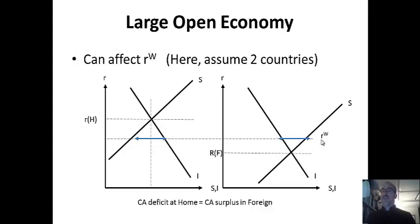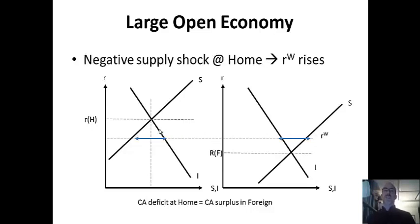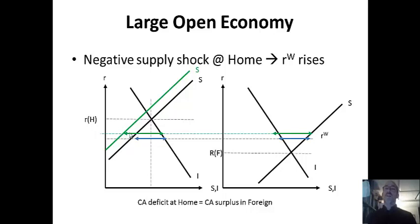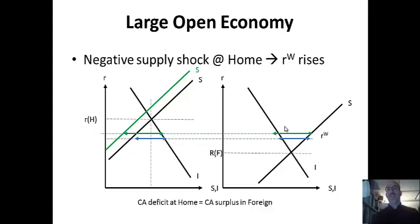If something changes in one country, it can change the world interest rate. For a large open economy, this country is a price maker, not a price taker. We introduce a negative supply shock at home and the world interest rate rises — less savings pushes the price up. This negative shock does two things: it widens the current account deficit, but not as much as in a small economy, because the world pool of capital gets scarcer and more expensive. It also pushes the world price up in the other country, causing them to save a little more and invest a little less.